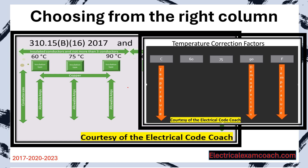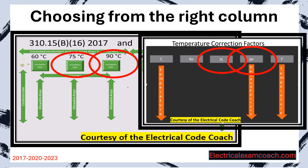Let's talk about choosing from the right column. Just like with bundling adjustments, 99.9% of the time we're going to choose from the 90 degrees C column for our starting ampacity, and we must also choose from the 90 degrees C column in our temperature corrections factor table. In the rare event it's not listed there, we'd choose from the 75 degrees C column — but that would be under very rare circumstances in the testing center.